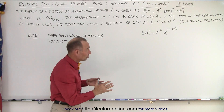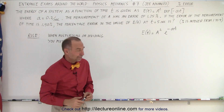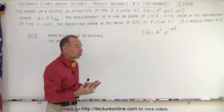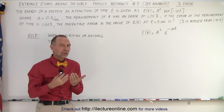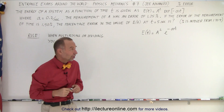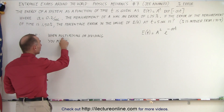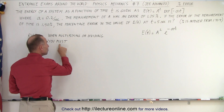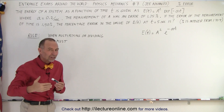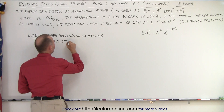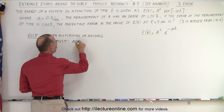The answer is going to be an integer between 1 and 9. So how do we approach that? We first need to understand the rules of dealing with percent errors. It turns out that when multiplying or dividing, you must add the percent errors.